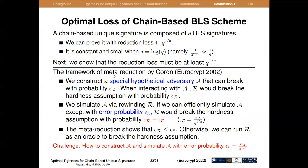We use the framework of meta-reduction to analyze this optimal loss. We first construct a special hypothetical adversary, and then simulate this hypothetical adversary via rewinding. If we can efficiently simulate such adversaries with error probability epsilon_e, then the reduction R will break the hardness assumption with probability epsilon_R minus epsilon_e. The meta-reduction shows that epsilon_R cannot be larger than epsilon_e, otherwise we can run R as an oracle to break the hardness assumption. The challenge is how to construct this special hypothetical adversary and how to simulate it with error probability of a definite value.